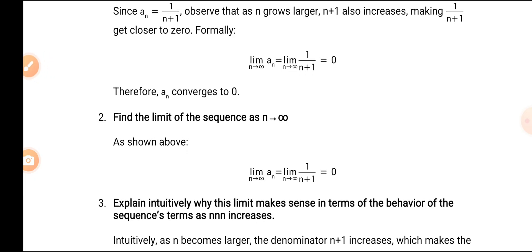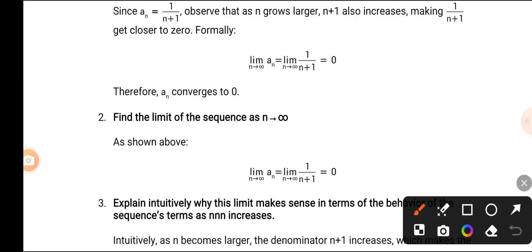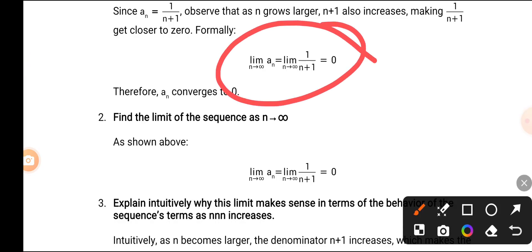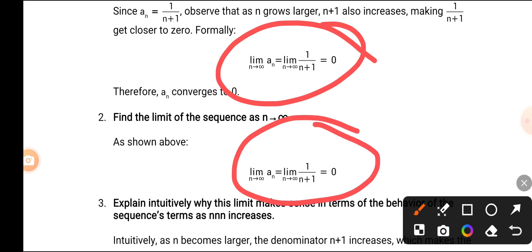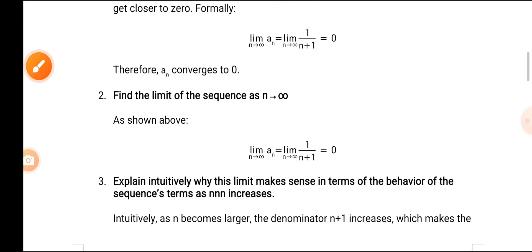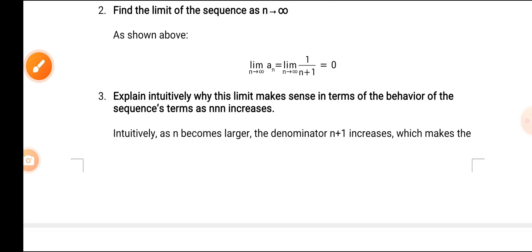Formally, as n approaches infinity, 1/(n+1) equals 0. Therefore the limit of An as n approaches infinity is 0.